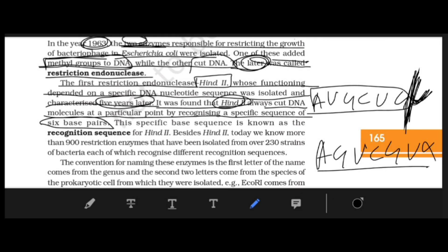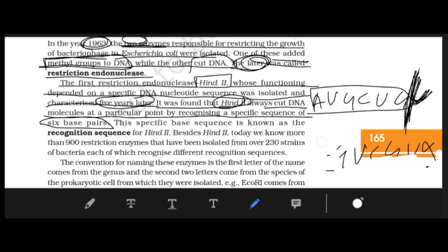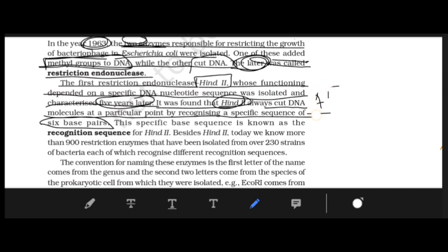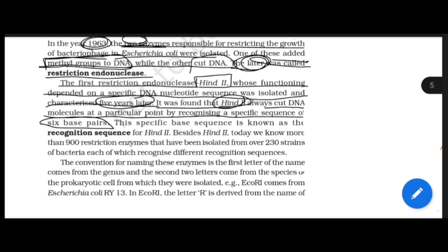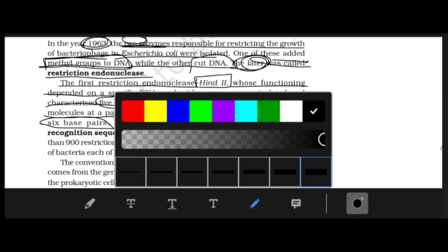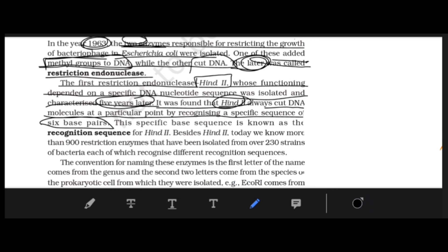The first restriction endonuclease was called HindII. Its function depends on a particular DNA nucleotide sequence — if the specific sequence is present, it will work; otherwise it will not work.